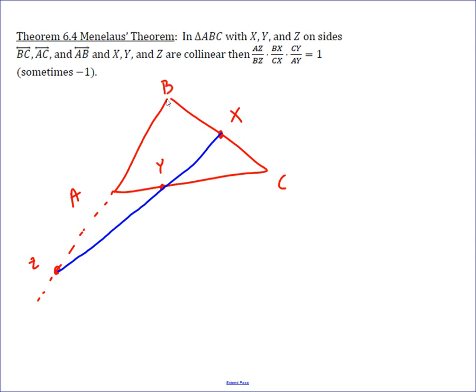If the ratio of those equals 1, then they are collinear. Or if they are collinear, then those relationships equal 1.